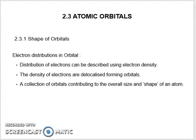How do we get the shape of orbitals? It's from the electron distribution in the orbital. Distribution of electrons can be described using electron density. The density of electrons are delocalized, forming orbitals—a collection of orbitals contributing to the overall size and shape of an atom.